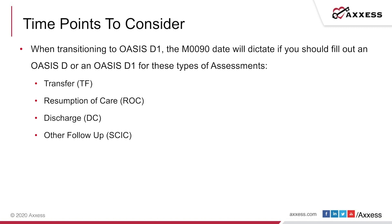There are some time points to consider when you're transitioning to OASIS D1. Basically your M90 date is going to dictate if you should fill out an OASIS D or an OASIS D1 for your transfer, your resumption of care, your discharge, or your other follow-up, which we also call the SCIC. But there are some strange caveats with the transition with OASIS D1 and PDGM.